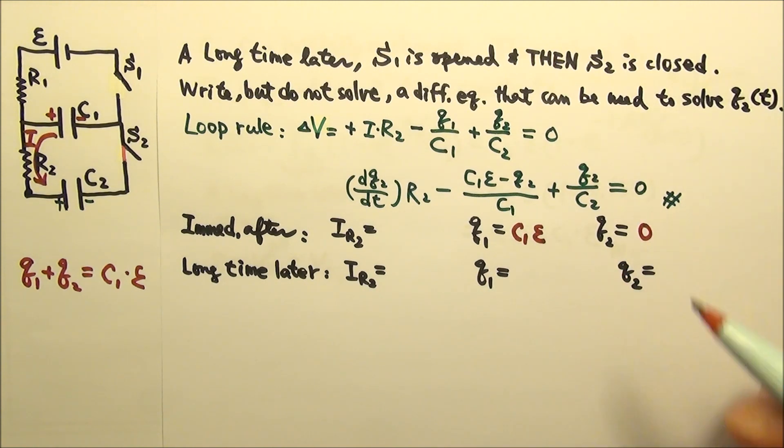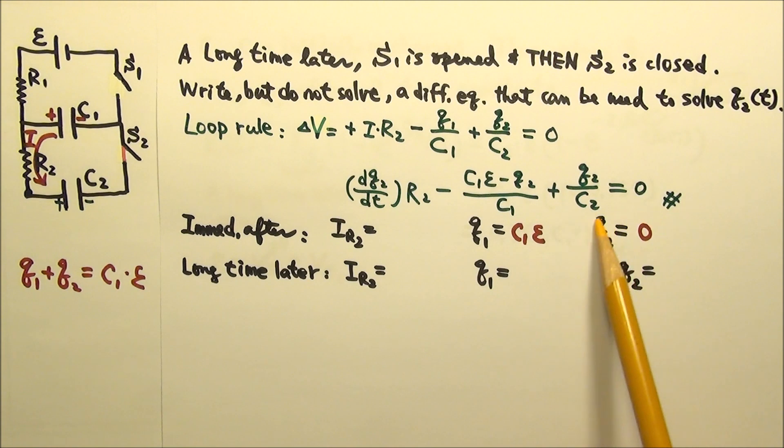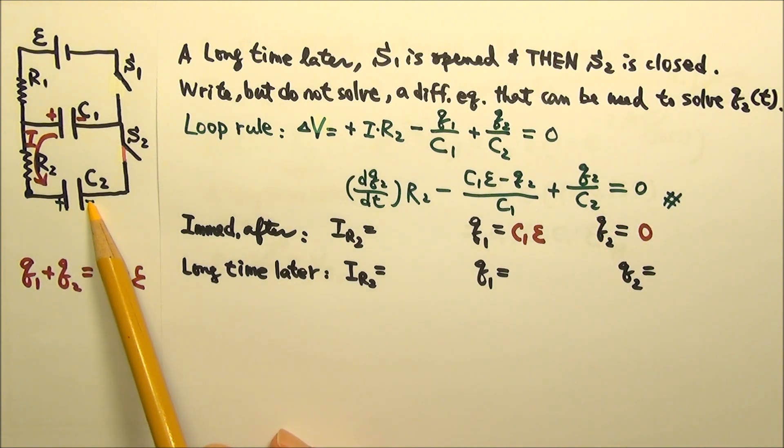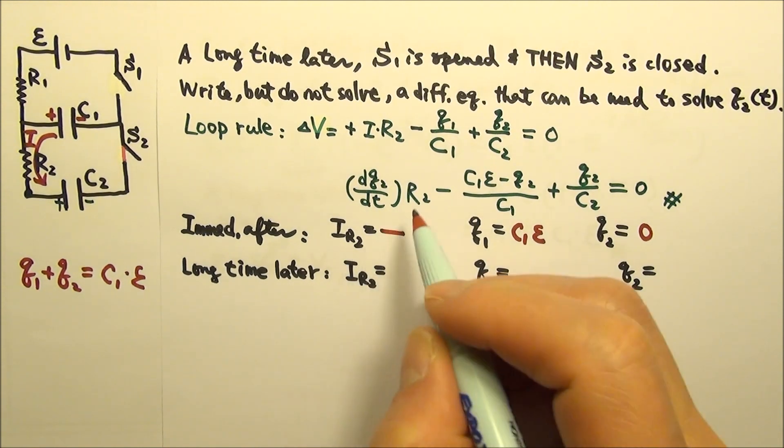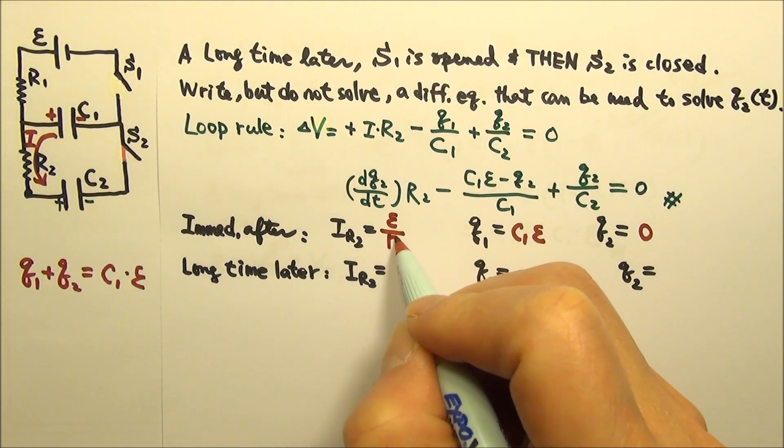So Q1 is still C1 times E, and Q2 is still 0. Q2 being 0 means C2 gets 0 volts. So R2 gets all the voltage of C1. Since Q equals CV, the voltage on C1 is E. So R2 also gets voltage E. Therefore, this current is V over R, E over R2.